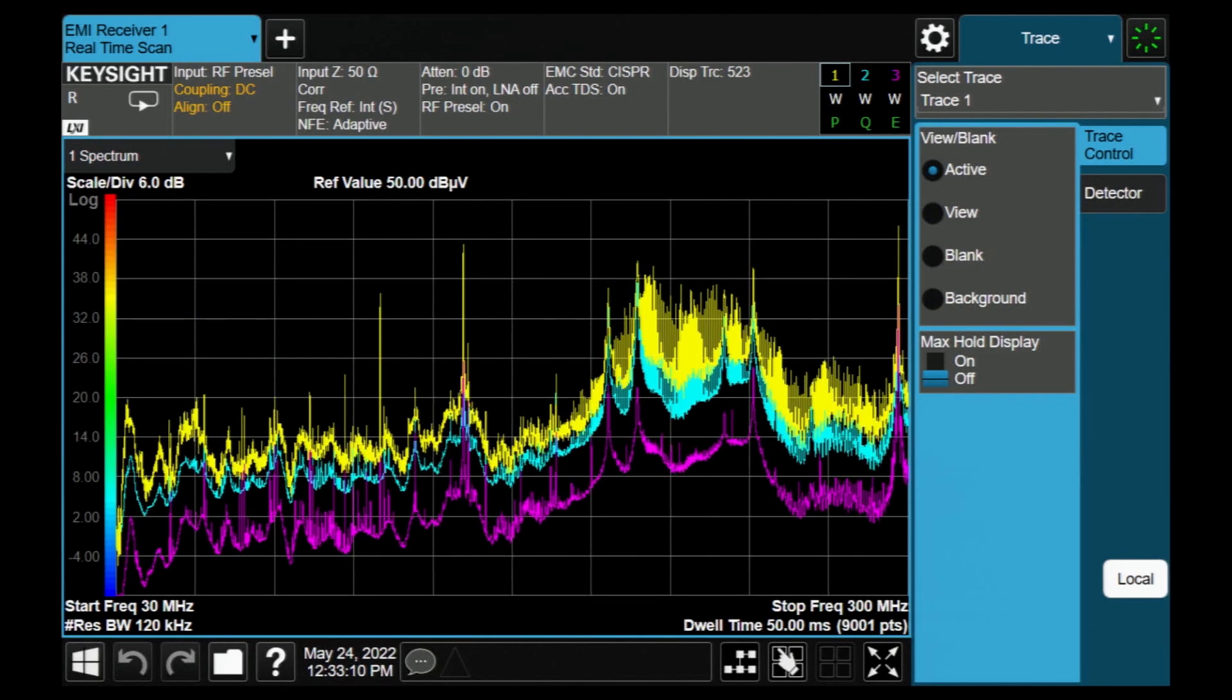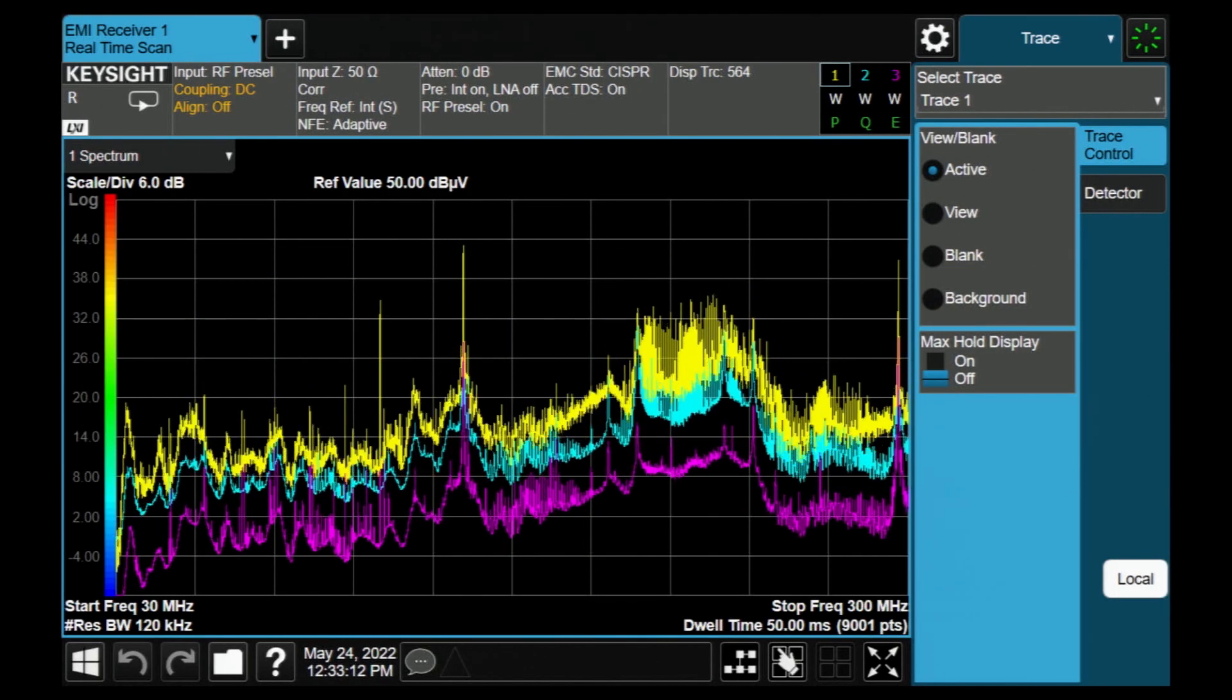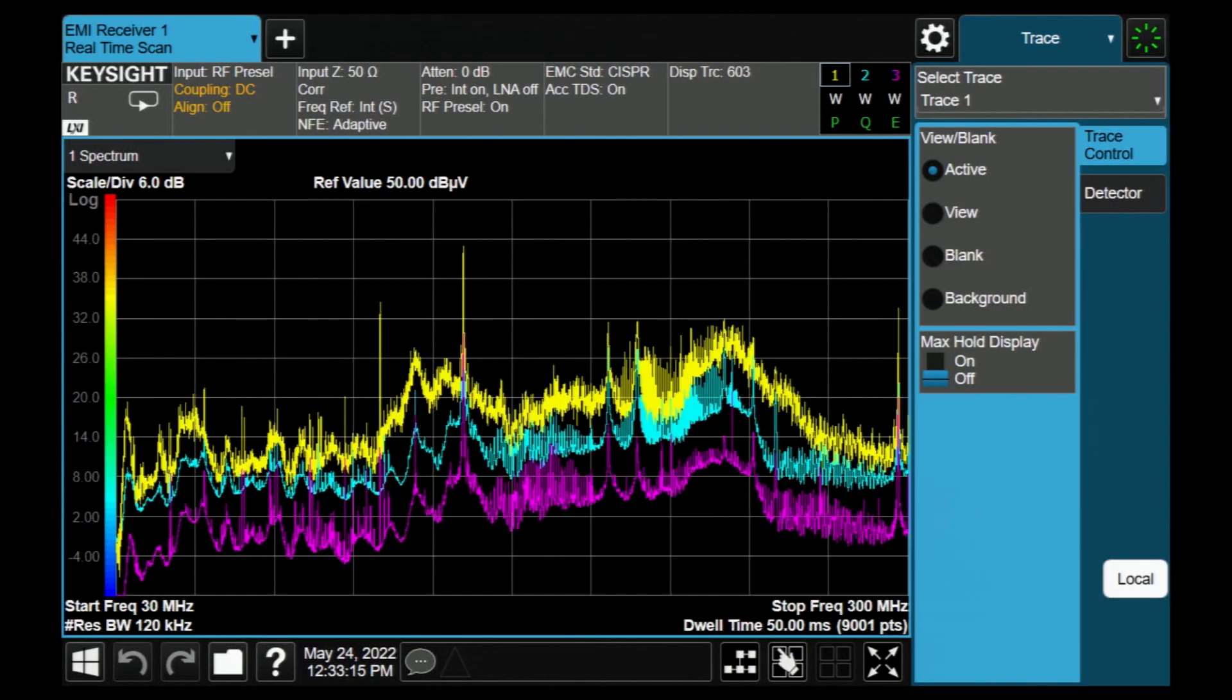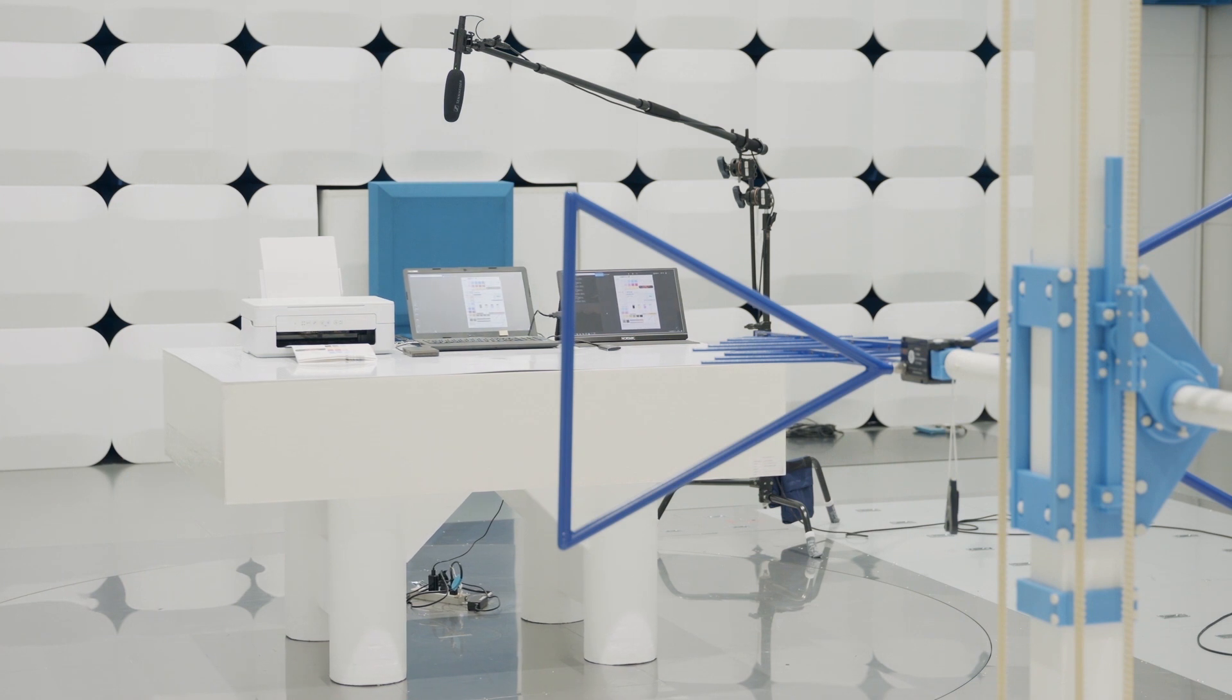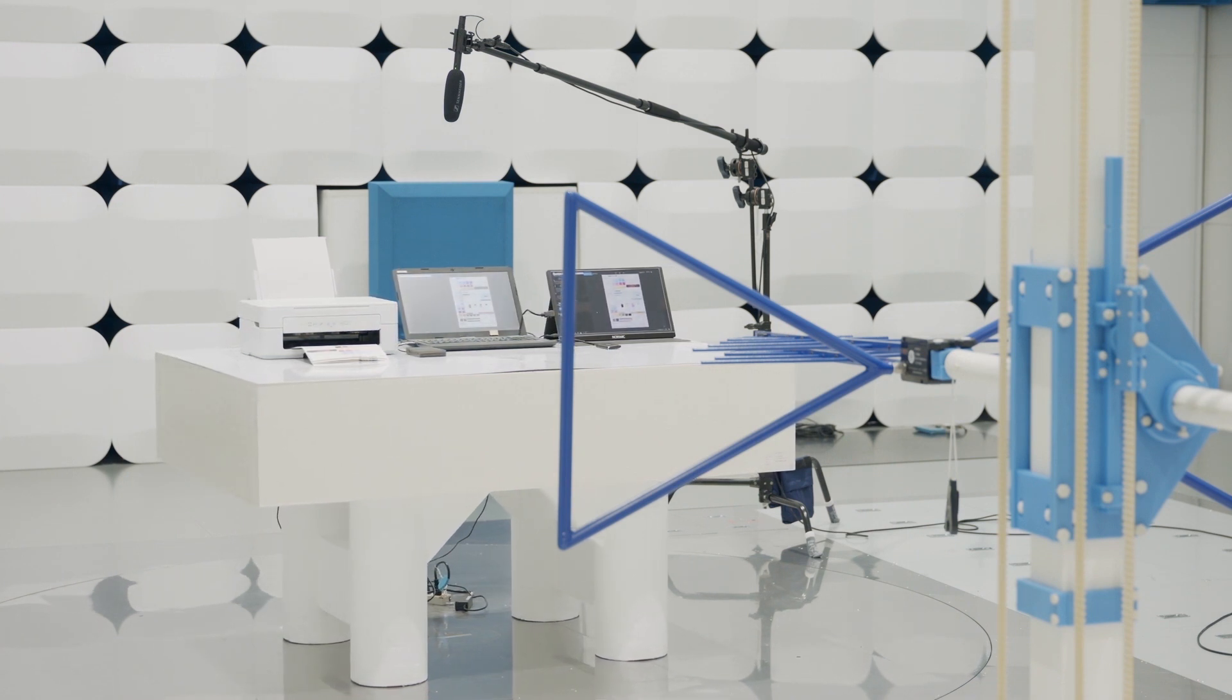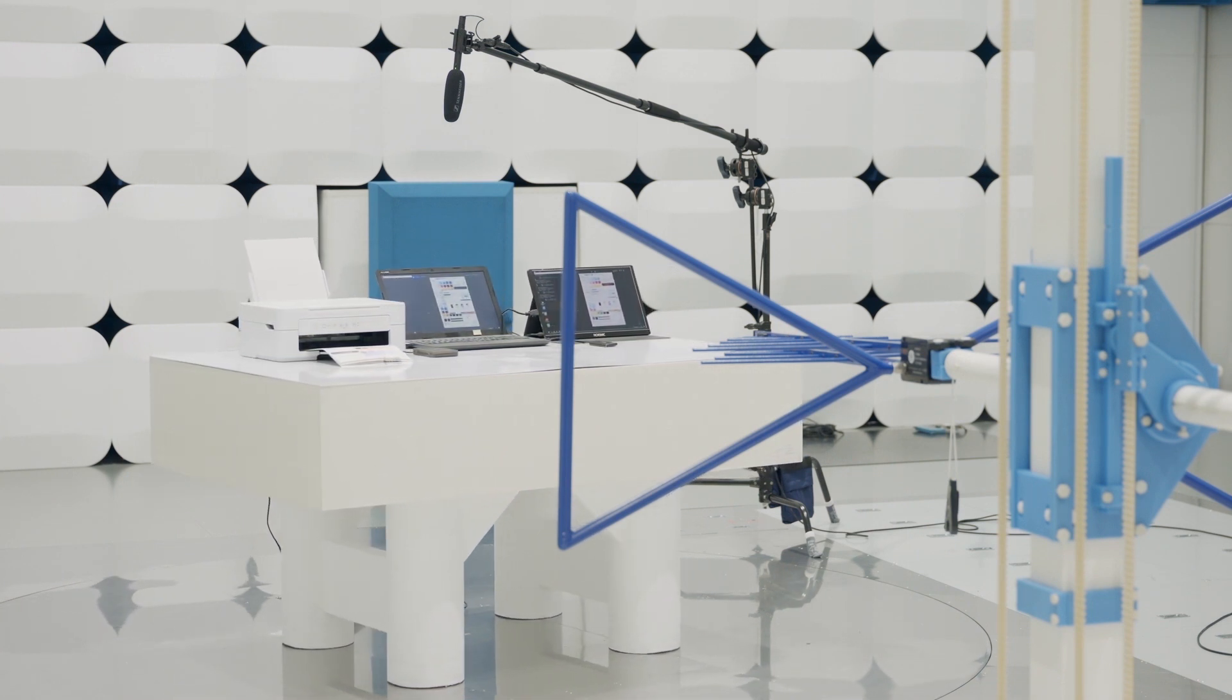You can precisely pick up noise that needs to be measured in the formal measurement by gaplessly measuring wideband noise. Let's prescan an EUT and measure the emissions level to learn the PXE's advantages.